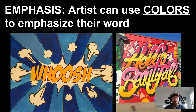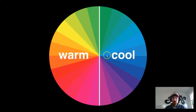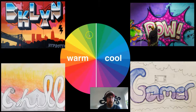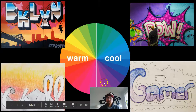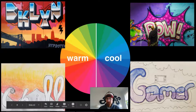The other way that artists can emphasize their word is by using colors. When choosing colors, there are two main choices to think about: warm colors like those on the left, or cool colors like those on the right. Warm colors tend to be fiery oranges, yellows, and reds, and they grab your attention and give energy and excitement. Cool colors — blues, purples, and greens — tend to be more calming and relaxing.